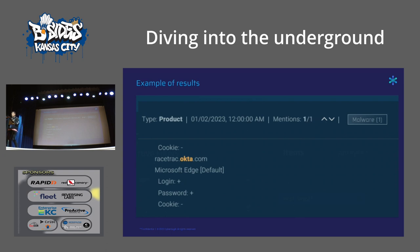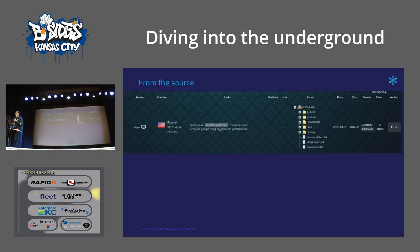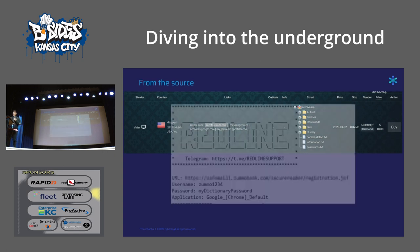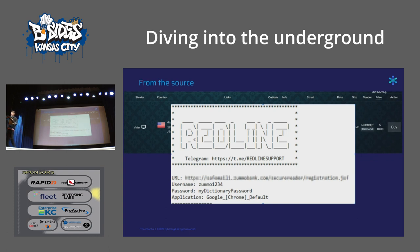Here's an example from Russian Market where somebody with access to racetrack.octo.com was compromised and listed for sale. This is the actual marketplace — not scary or special-looking, basically a blue version of Amazon. Experienced and less-experienced threat actors alike use these markets to gain initial access rather than trying to create it themselves. They simply search for a domain, find an account for sale, and pay — maybe a dollar or ten dollars — to get usernames, passwords, and sometimes session cookies to hijack a session.